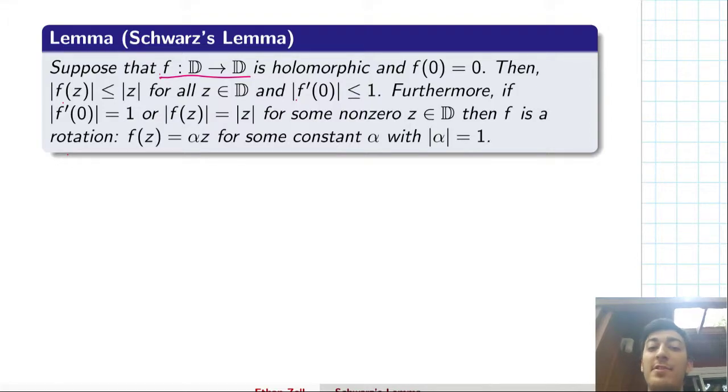Suppose that f is a holomorphic function from the unit disk to itself, and I'll use this bold D to signify the unit disk, and also suppose that it fixes 0. Then immediately we know something about this f. We know that the modulus of f is bounded above by the modulus of the input z, for any z in the disk. And we also know something about the modulus of the derivative of f at 0.